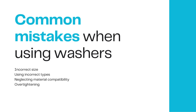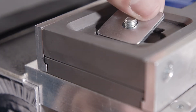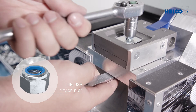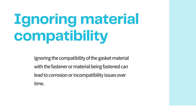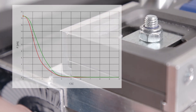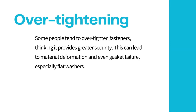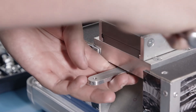Common mistakes when using washers. Incorrect size: one of the most common mistakes is choosing the wrong washer size. Using washers that are too small or too large for the fastener will compromise the effectiveness of load distribution and tension maintenance. Using the wrong type: confusing flat washers and spring washers is a common mistake; using the wrong type can cause insufficient tension or material damage. Ignoring material compatibility: ignoring the compatibility of the washer material with the fastener or material being fastened can lead to corrosion or incompatibility issues over time. Over-tightening: some people tend to over-tighten fasteners, thinking it provides greater security, but this can lead to material deformation and even washer failure, especially with flat washers.